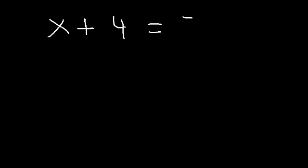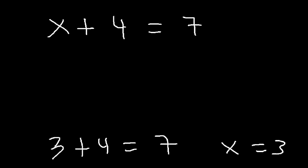Let's say if we have the equation x plus 4 is equal to 7. How can we solve for x? Keep in mind, x is simply a number — a number that you currently don't know the value of. What number plus 4 is 7? We know that 3 plus 4 is 7, therefore x is equal to 3.